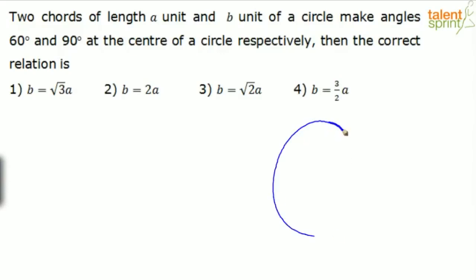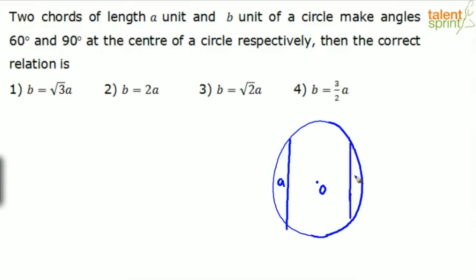Let's draw the figure. There are two chords of length a units and b units. This is the circle with center O. The first chord is a units and the second chord is b units. The first chord makes an angle of 60 degrees at the center, and the second chord makes an angle of 90 degrees at the center.